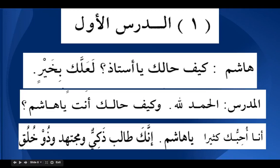Inna ka — ka is ismu Inna, so where is khabar Inna? It is talibun. Inna ka talibun zakiyun — zakiyun is a na't for talibun. Most definitely you are an intelligent student. Wa mujtahidun — wa is atf and mujtahidun is ma'tuf 'alayh, meaning hardworking. Wa dhukhulukin — and here we come to dhu, which we are going to learn today.